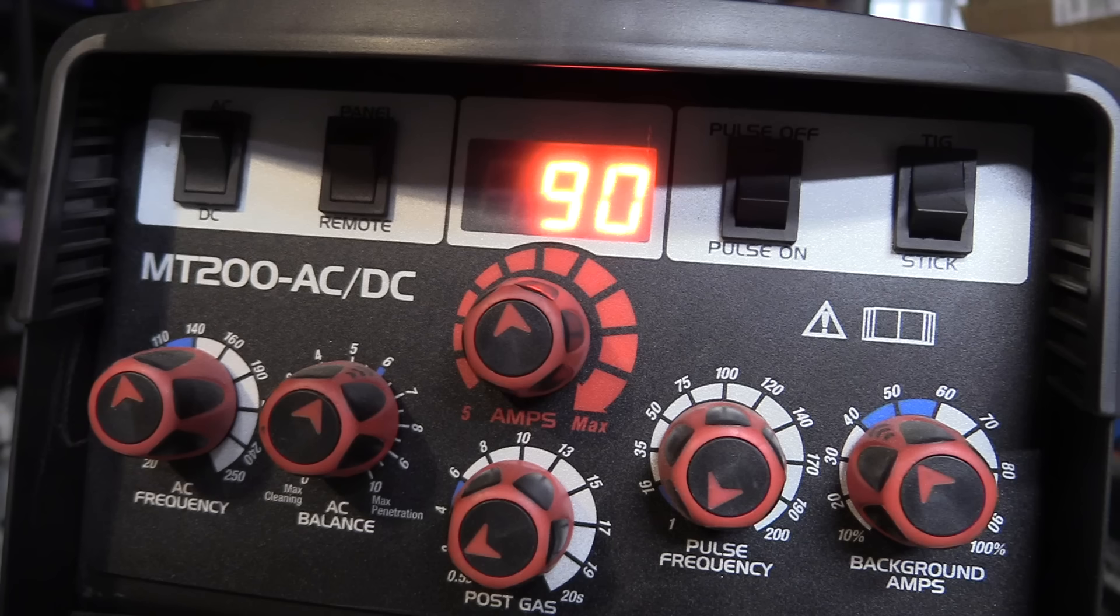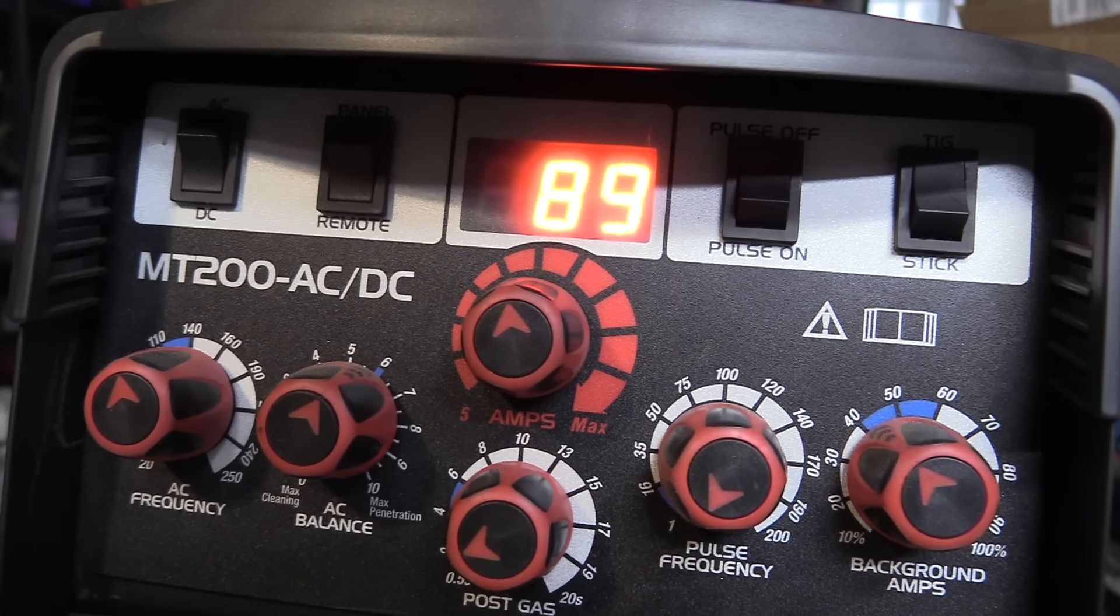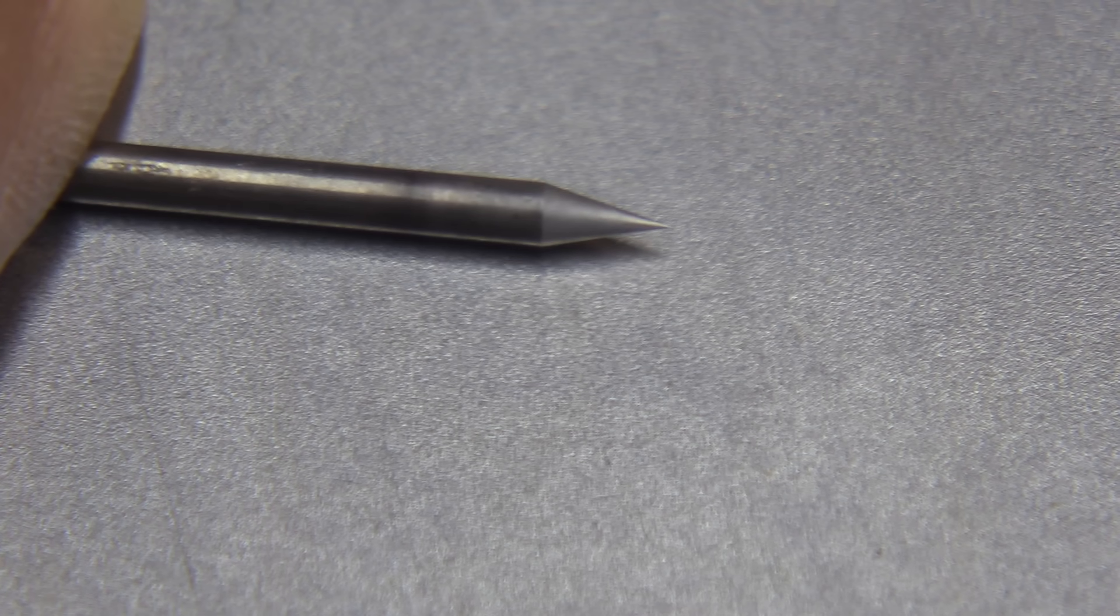Flash tacking is just tack welding sheet metal at high amperage. So a part of that equation is a nice clean sharp electrode. You don't want any misfires when you're doing this.